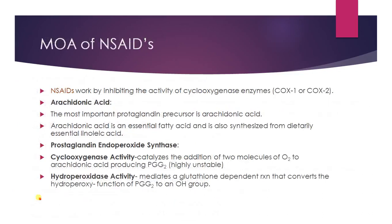The mode of action of these non-steroidal anti-inflammatory agents: these agents work by inhibiting the activity of cyclooxygenase enzyme, COX-1 or COX-2. Before discussing the mode of action, what is arachidonic acid? It is the most important prostaglandin precursor. Arachidonic acid is an essential fatty acid, also synthesized from dietary essential linoleic acid. It is eicosatetraenoic acid, having four double bonds and 20 carbons in its structure. Arachidonic acid does not exist as a free acid, but rather is esterified in phospholipids.